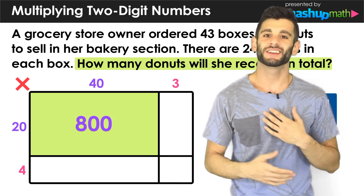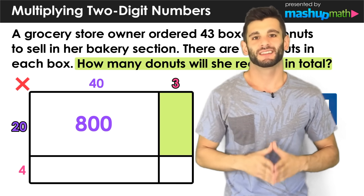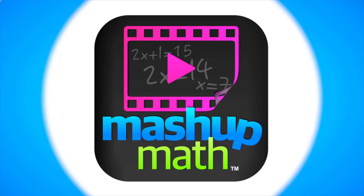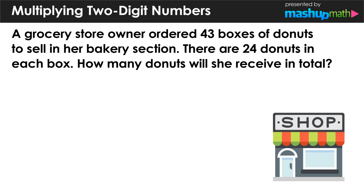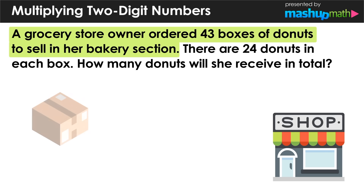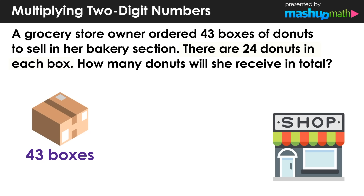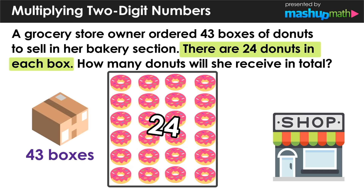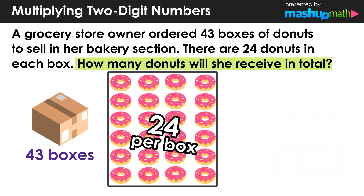Welcome back to Mashup Math, Anthony here. In this problem we are going to gain some experience solving real world problems involving multiplying two-digit numbers using area models. We have a grocery store owner who ordered 43 boxes of donuts to sell in her bakery section, and we know that there are 24 donuts inside each box. We need to figure out how many donuts she will receive in total.